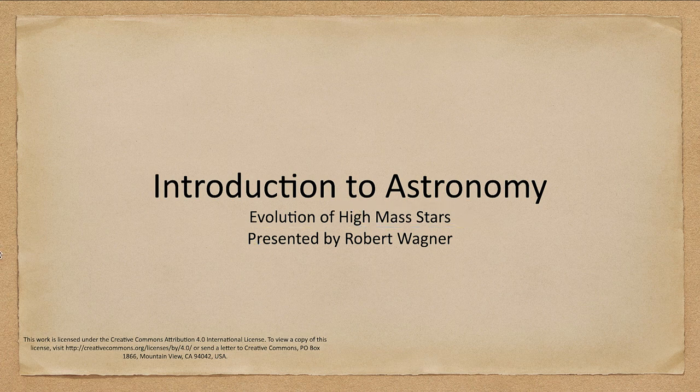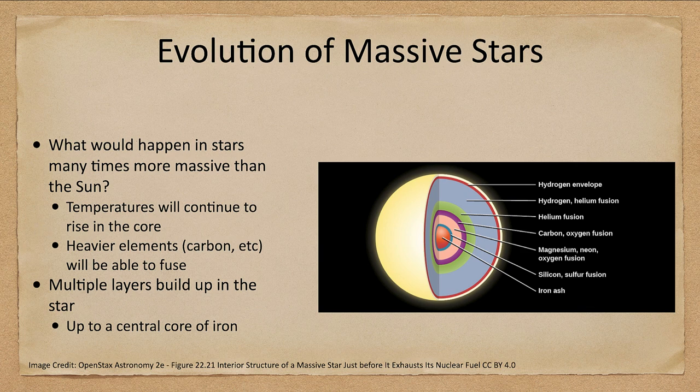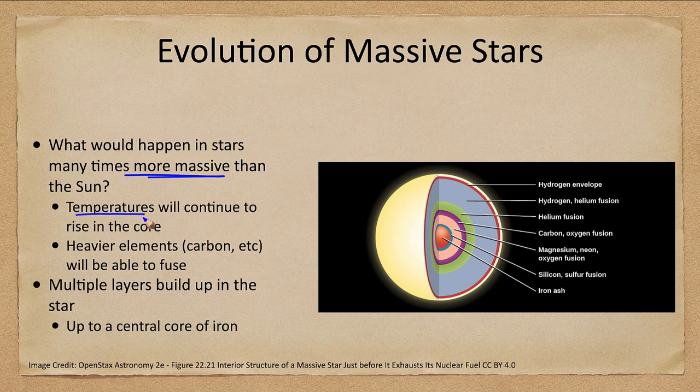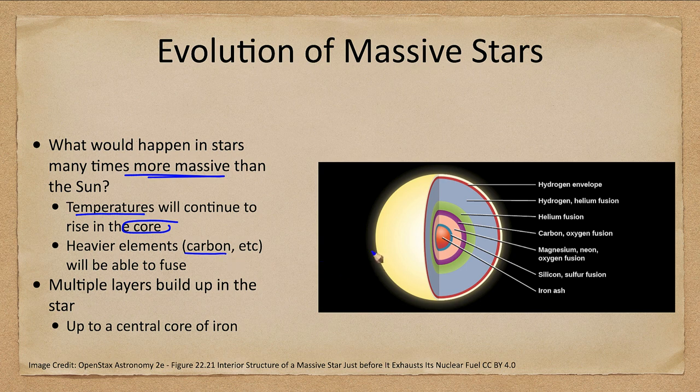So let's take a look at these even more massive stars. What if we have stars more massive than the Sun by a good amount? Well, temperatures can continue to rise in the core of the star and that means even heavier elements will be able to fuse.